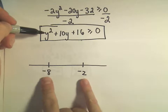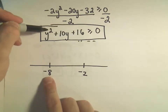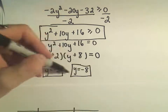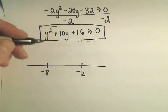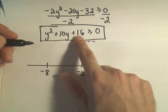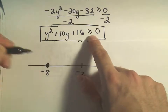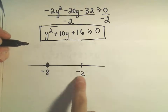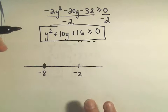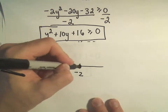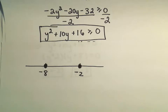I always check the critical values first. If you plug negative 8 in, we're going to get zero out — that's what we figured out by doing this algebra. Zero is greater than or equal to zero, so that works. If I plug negative 2 in, I'm also going to get zero out, so that number will work as well. Certainly zero is greater than or equal to zero.